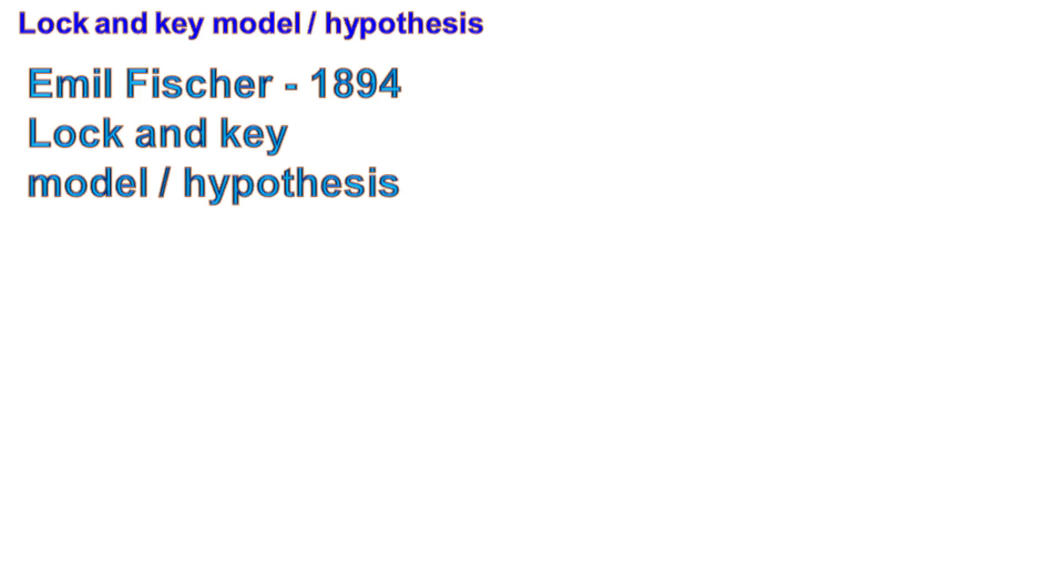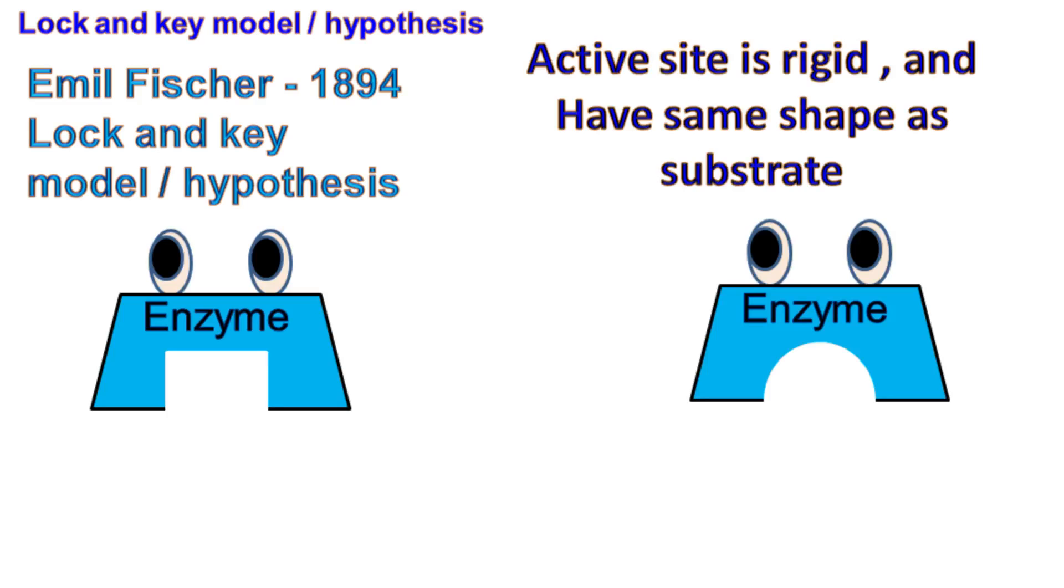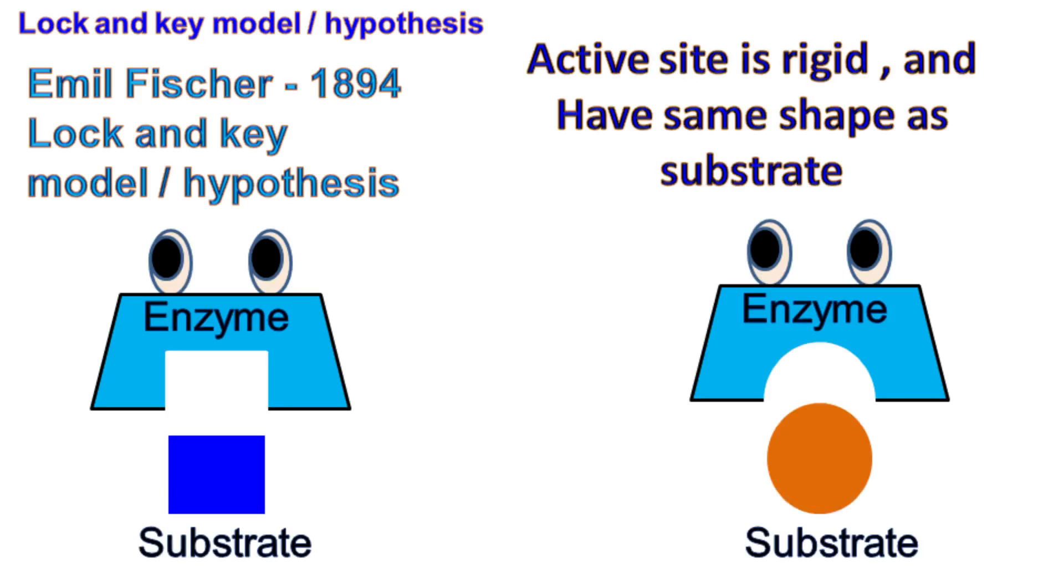The lock and key model is one of the earliest models proposed for the mechanism of enzyme action. It was proposed by Emil Fischer in the year 1894. It was proposed based on the fact that enzymes are very specific for the substrate.